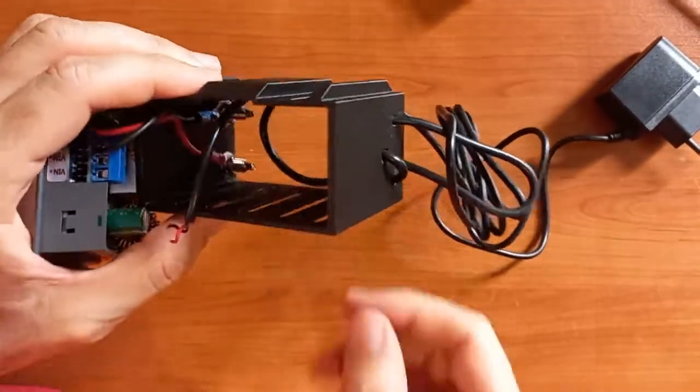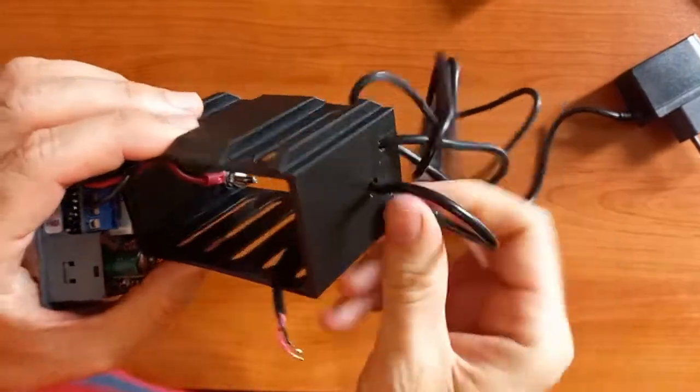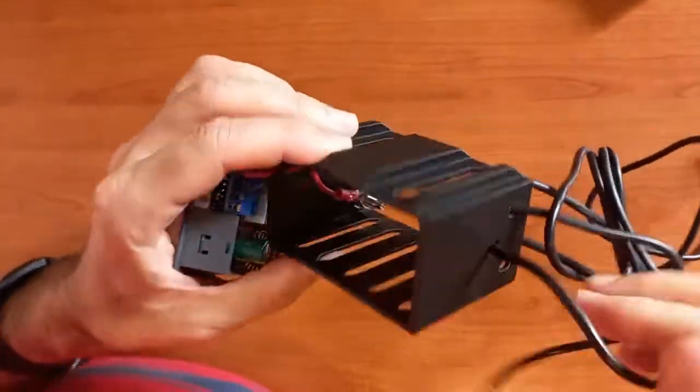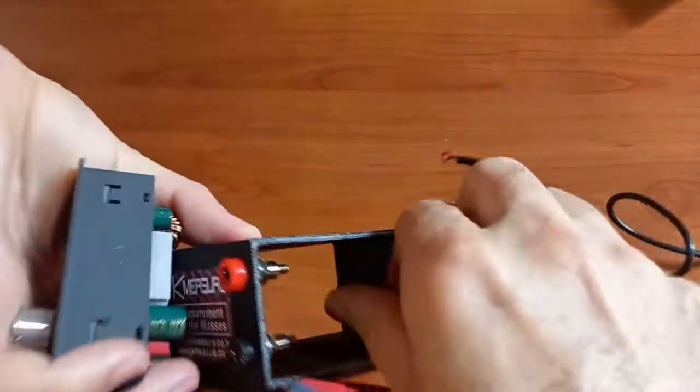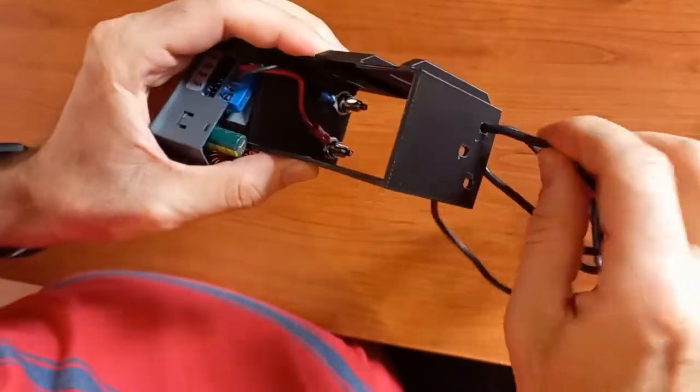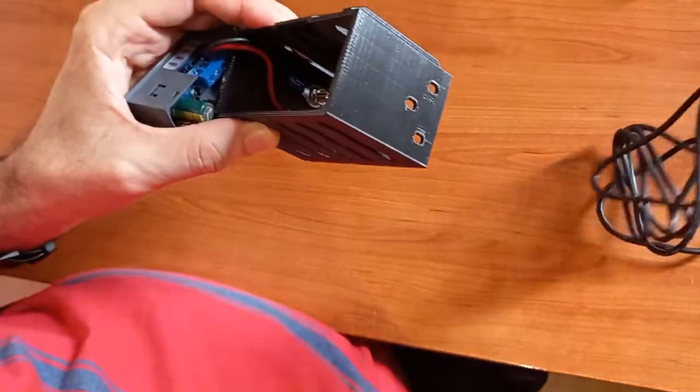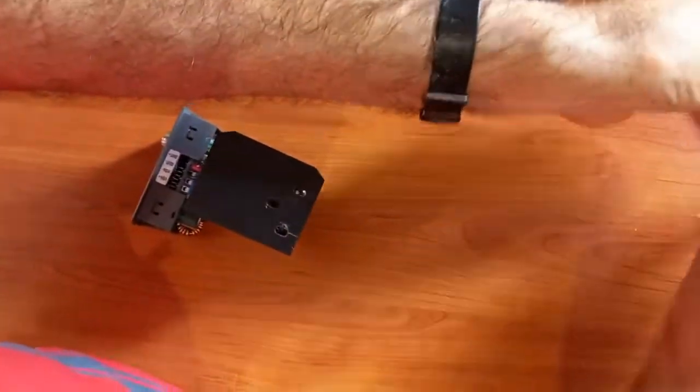After you've loosened the cable, you just pull it back through these holes like that. Don't force anything, and then you insert the new cable.